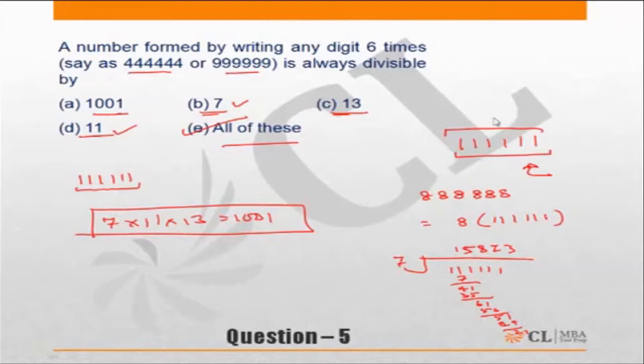So in such a question, even if you have to check, you should not be checking for all, you should be checking just for 1001 because if it is divisible by 1001, it will be divisible by 7 × 13 as well as 11. And you will find it is divisible by 1001. So 1001 divisibility means it is divided by 7 × 13 × 11.